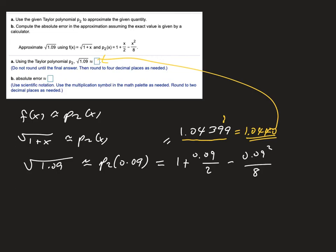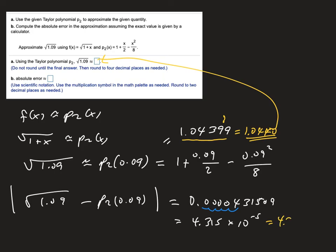And then absolute error will be just like the other ones. Square root of 1.09 minus that number in absolute value. If you want to just check against mine, I get 0.000043159. In scientific notation, 1, 2, 3, 4, 5. Scientific notation, this is 4.315 times 10 to the minus 5. And so I would be rounding that to 4.32 times 10 to the minus 5 for my answer that goes here.